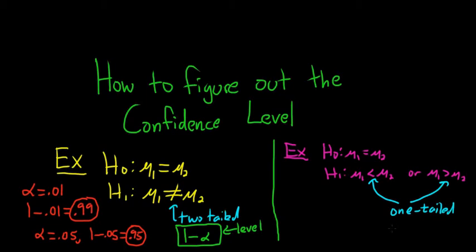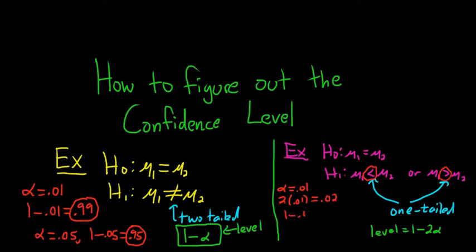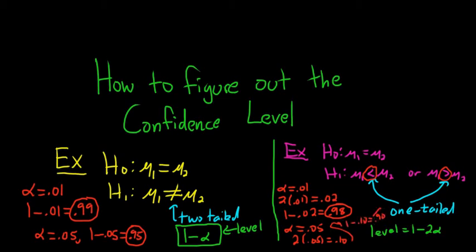Whenever it's one-tailed, the formula for the confidence level is 1 minus 2 alpha — it's like you're making it two-tailed. For example, if alpha is .01, since it's one-tailed you first multiply by two to get .02, then do 1 minus .02, giving you .98. If alpha was .05, you multiply by two to get .10, then 1 minus .10 gives you .90. That's your confidence level.